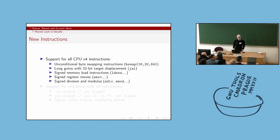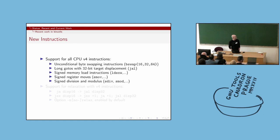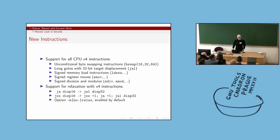They said no, why would you ever need signed division? Well, turns out it's useful. In addition to that, there are things you can do now with some of the newer jump instructions — specifically relaxation: if you have jumps that were too far before, now we can relax them. We turned relaxation on by default in the assembler.